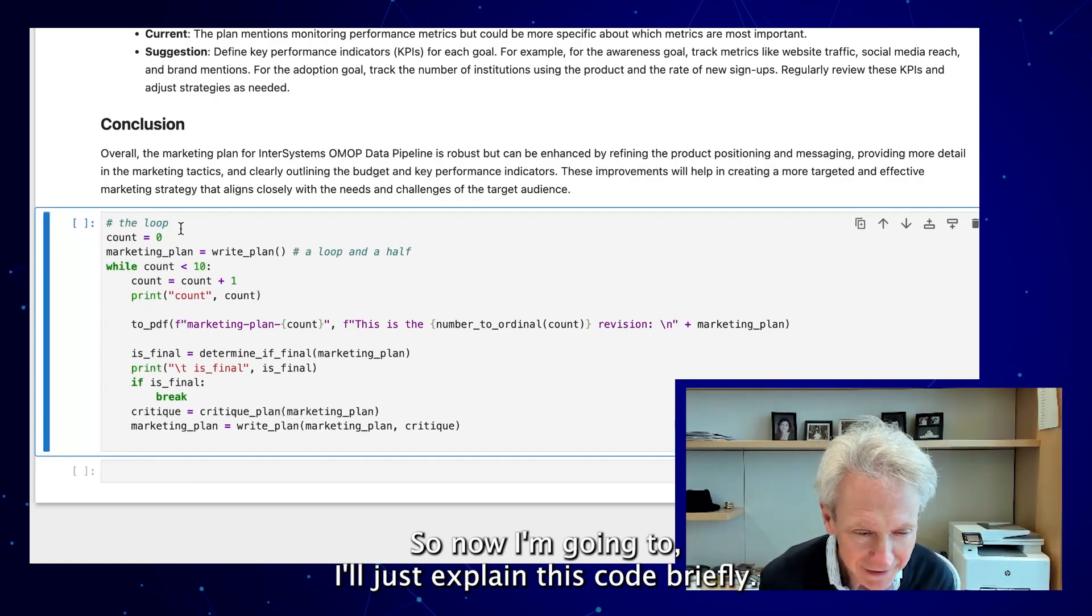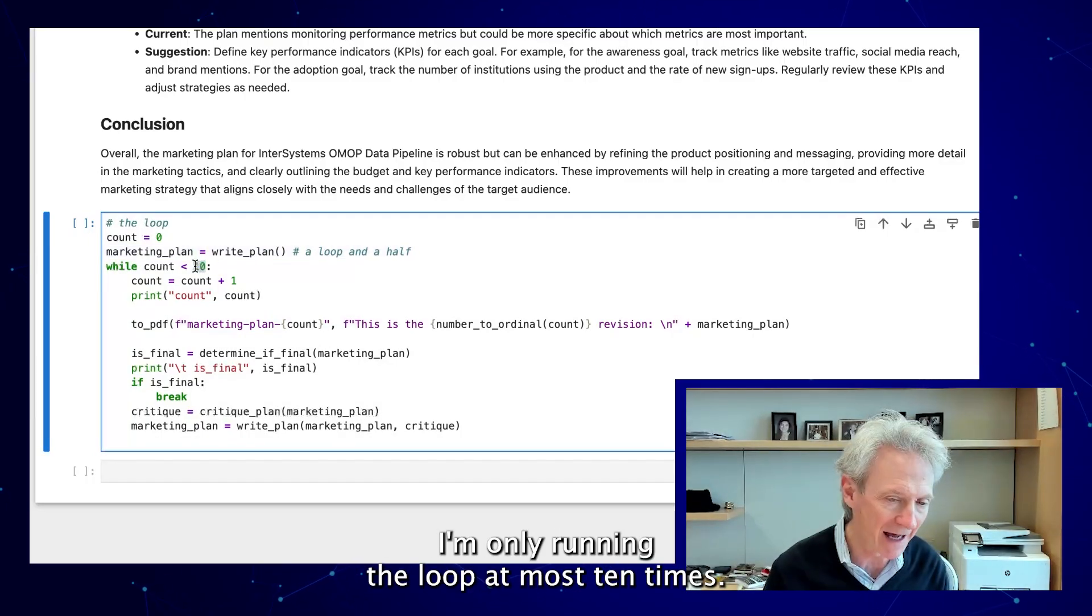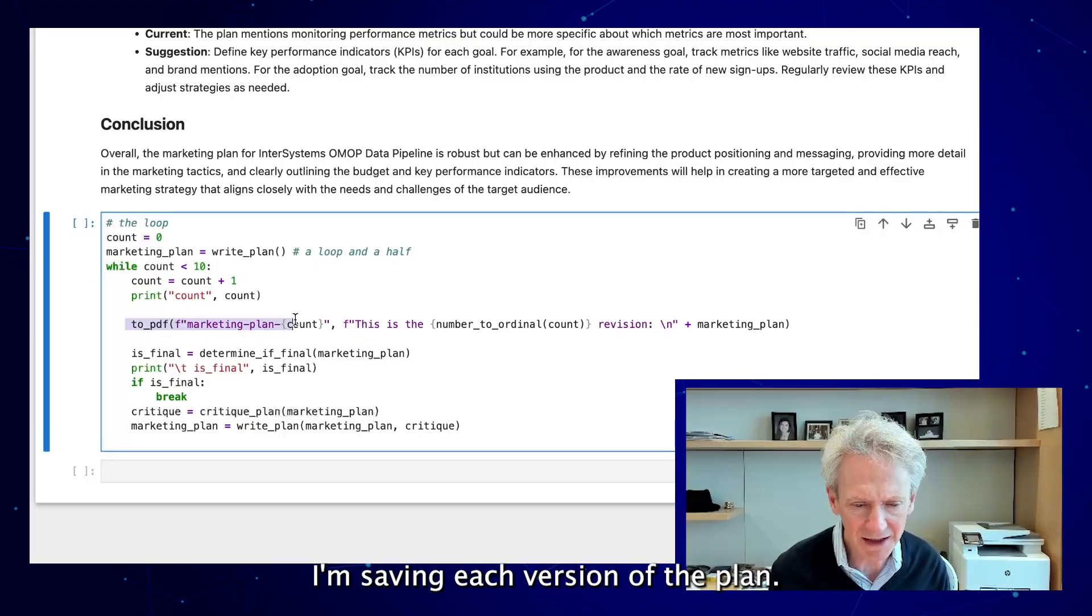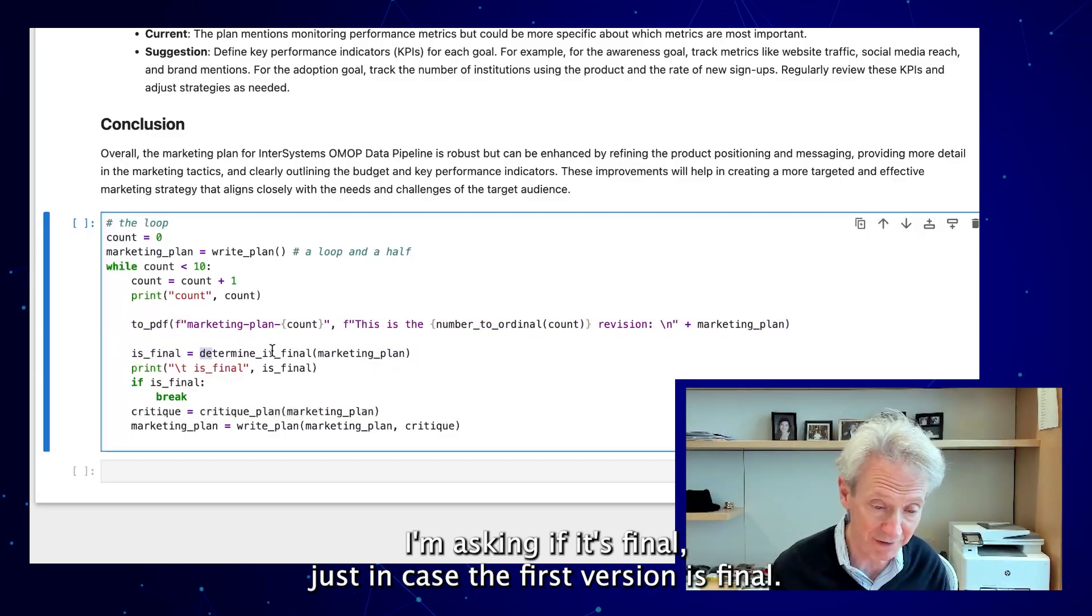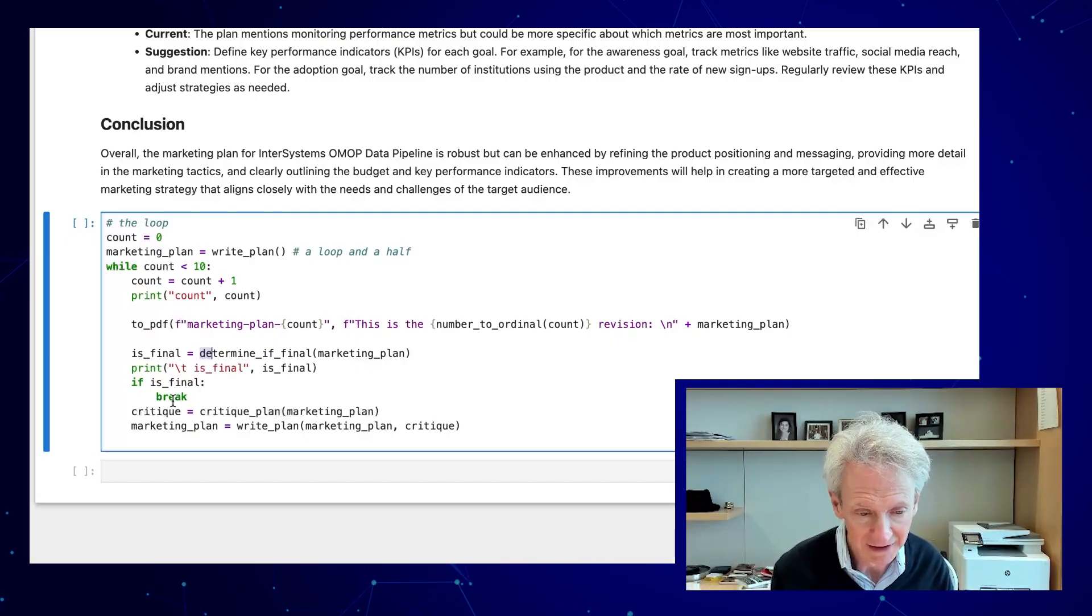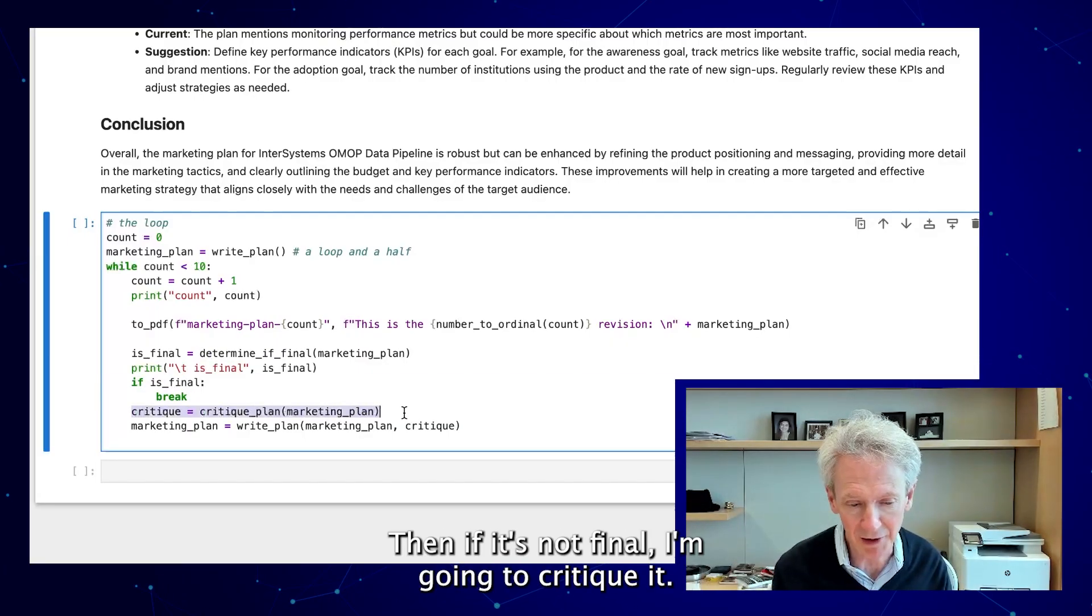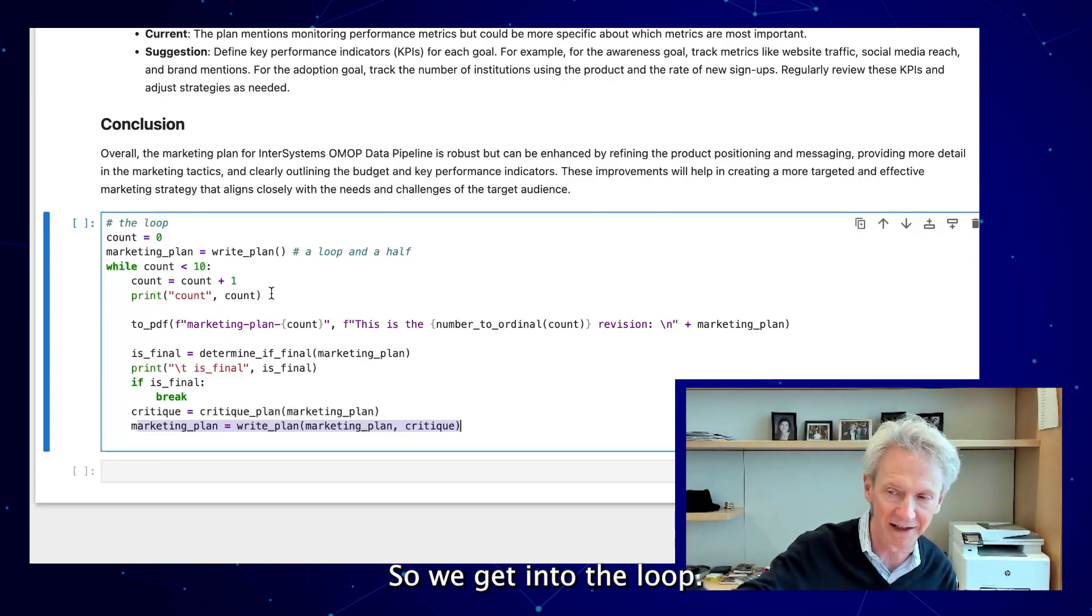So now I'll just explain this code briefly. I'm writing an initial version of the plan. I'm only running the loop at most 10 times. I'm saving each version of the plan. Then for this first version, I'm asking if it's final just in case the first version is final. And if it's ever final, I'm going to stop this loop. Then if it's not final, I'm going to critique it. I'm going to write a new version of the plan and then it's going to go again. I'm going to save the plan, I'm going to determine if that's final. So we get into the loop.